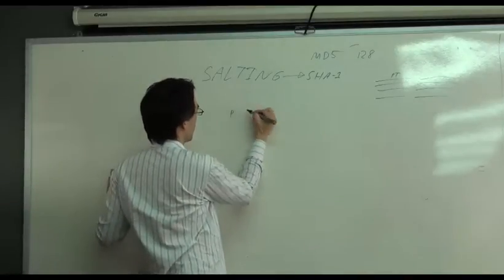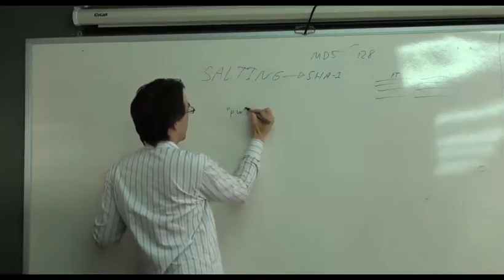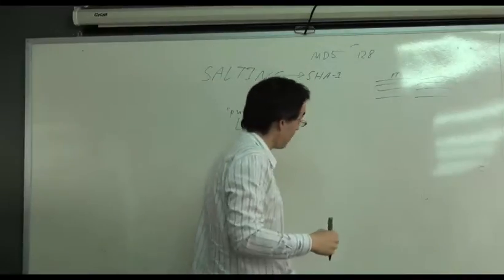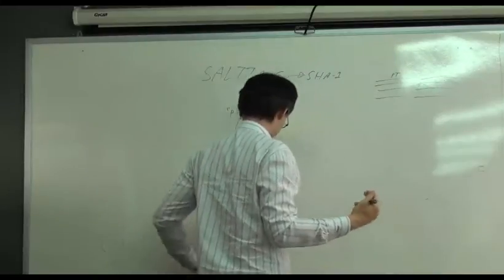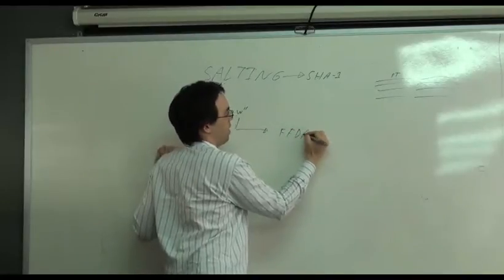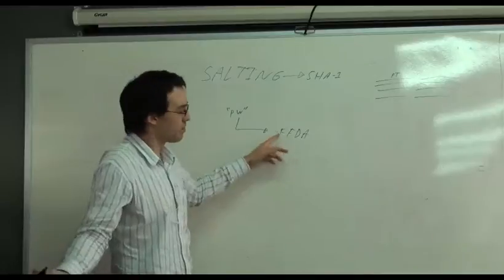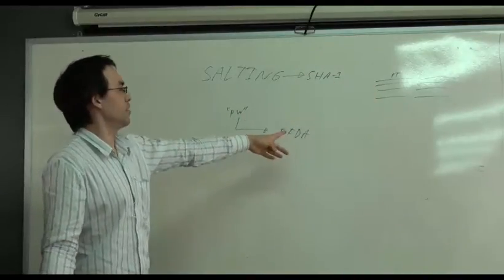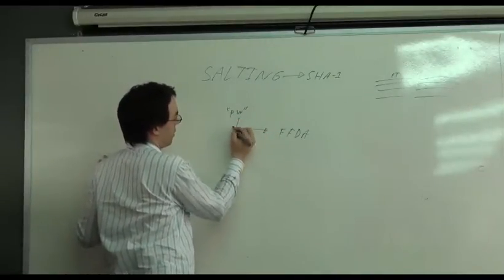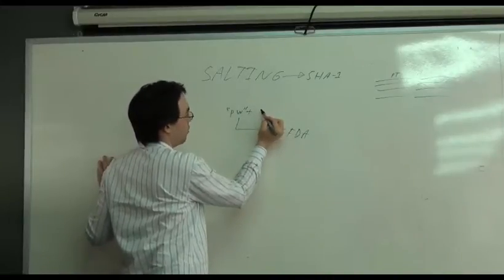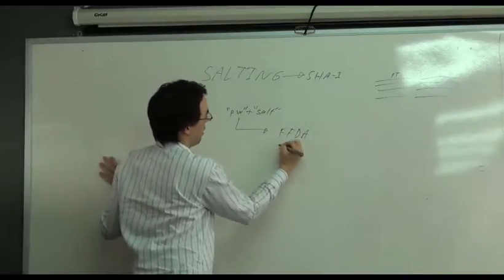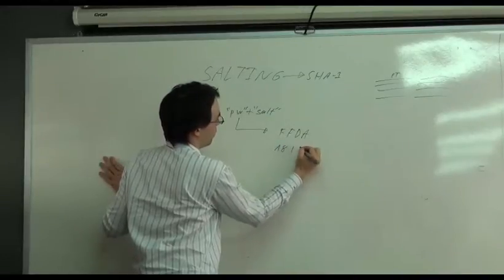So anybody here know what salting is, technically? How it works? Yes? Add some alphabet to the password. Yes, not alphabet, but you add something to the password to help obfuscate it. So let's say that in the simple example, say that your password is the two-character password of pw. So you generate a, like SHA-1 of this, and let's never speak of MD5 ever again. You generate a hash of that, and it comes out as like f, f, d, a, whatever. All right, so that way, if it's existing in that rainbow table, then people already know what that is, right?